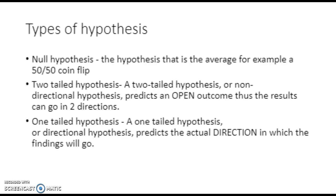There are three types of hypothesis. There's the null hypothesis — this hypothesis predicts the average, for example a 50-50 coin flip. There's the two-tailed hypothesis, also known as the non-directional hypothesis, which predicts an open outcome, meaning results can go in two directions. And then there's the one-tailed hypothesis, or directional hypothesis, which predicts the actual direction in which the findings will go.